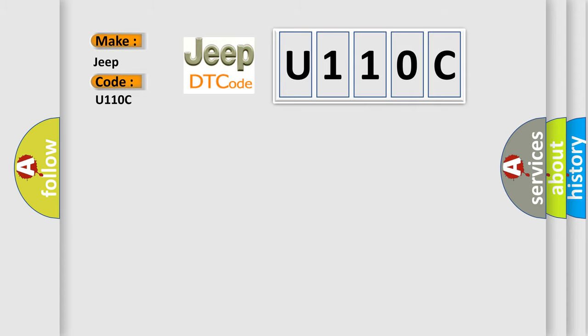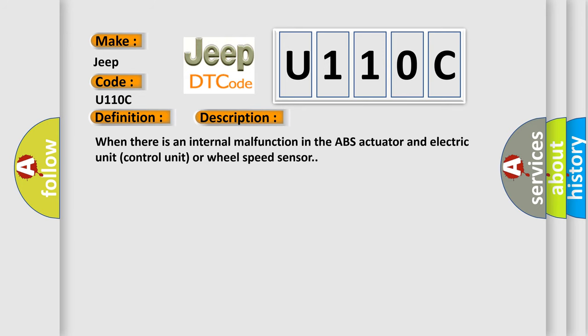The basic definition is ABS controller and electric unit control unit. And now this is a short description of this DTC code. When there is an internal malfunction in the ABS actuator and electric unit control unit or wheel speed sensor. This diagnostic error occurs most often in these cases.